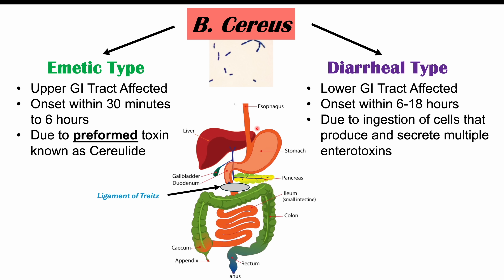As we ingest the cells, they survive the stomach, enter into other parts of the gastrointestinal system, and then as they move through the intestinal system, they can produce and secrete multiple enterotoxins leading to the diarrheal type. So these are the two main types of reheated rice syndrome, or the food poisoning caused by Bacillus cereus infection.